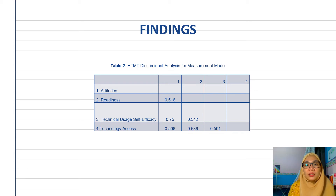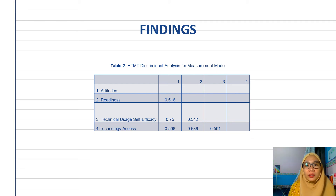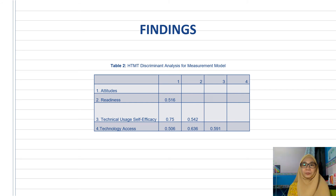In step two, we assessed discriminant validity using the HTMT criterion. The HTMT value should be less than or equal to 0.85 for the stricter criterion, and the more lenient criterion should be less than or equal to 0.9.